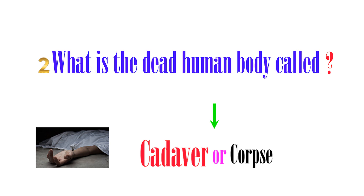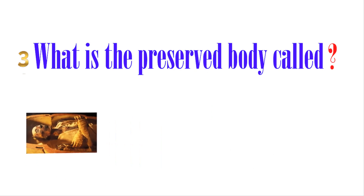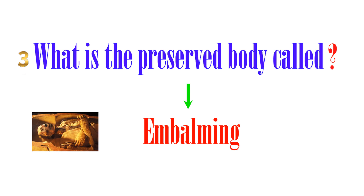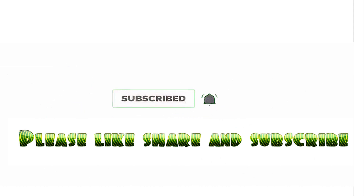The third and last question is: what is a preserved body called? When a body is preserved and kept for people to view, we call it embalming — spelling: e-m-b-a-l-m-i-n-g. You may have heard of this, and some people have seen that the bodies of pharaohs were preserved. When a body is preserved using chemicals so that it does not decay, we call that body embalming.